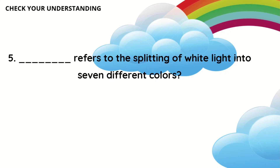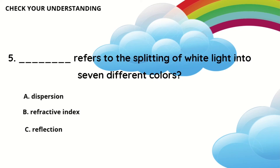Question five: blank refers to the splitting of white light into seven different colors. A — dispersion. B — refractive index. C — reflection. D — reflection. If your answer is letter A, dispersion, then you are correct.